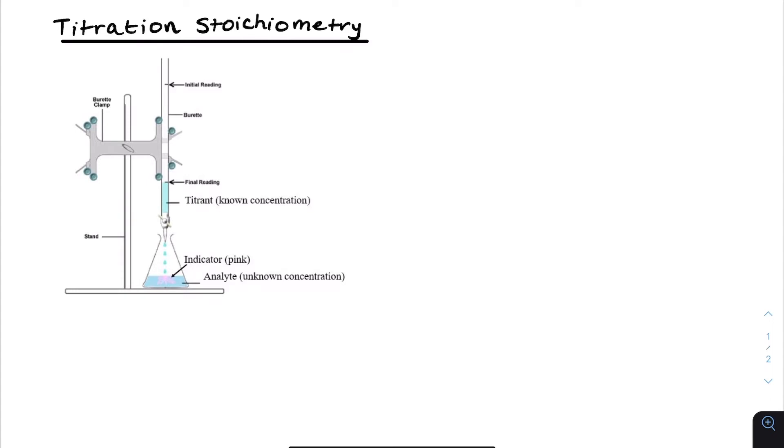It involves using a titrant, which we see is in this buret over here, and dripping it slowly into the analyte with an indicator. And when the indicator changes color, that's when the analyte is neutralized.